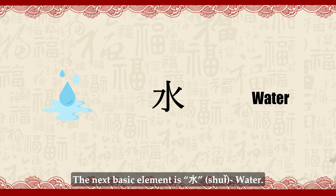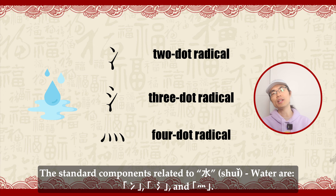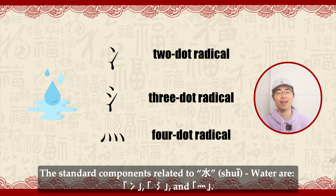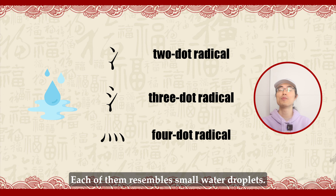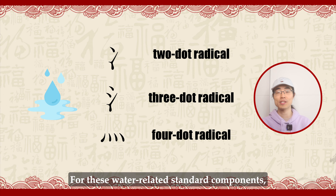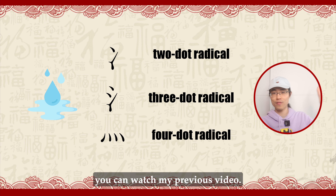The next basic element is Shuǐ (水), water. The standard components related to water are the two-dot, three-dot, and four-dot radicals — each of them resembles small water droplets. For these water-related standard components, you can watch my previous video.